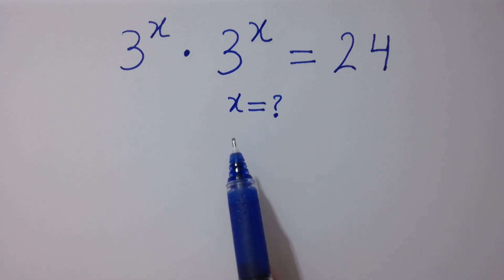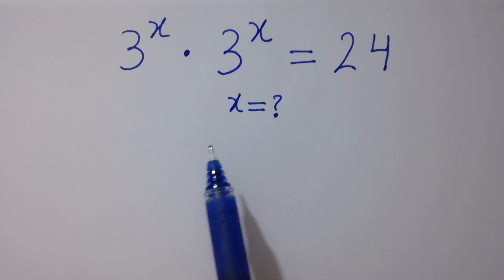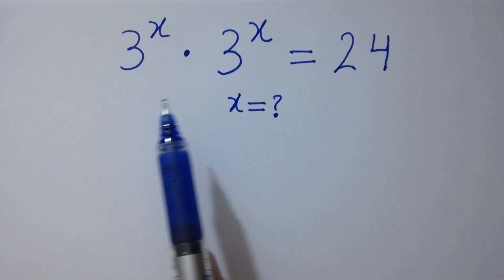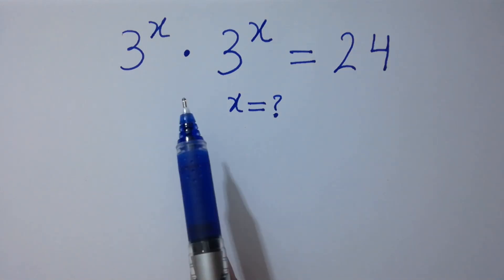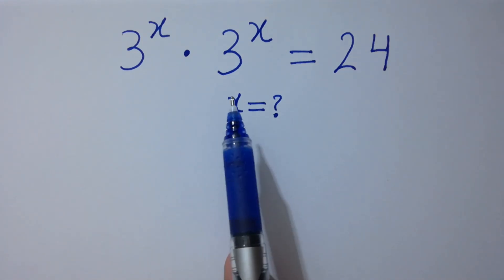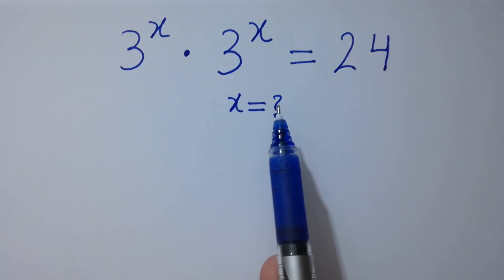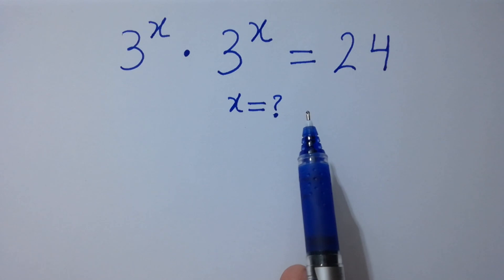Hello friends. Find the value of x if 3 to the power x times 3 to the power x equals 24.